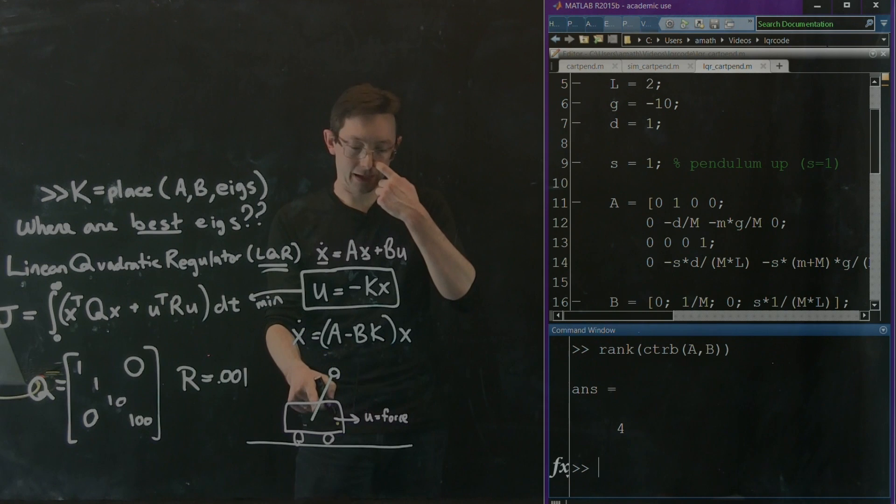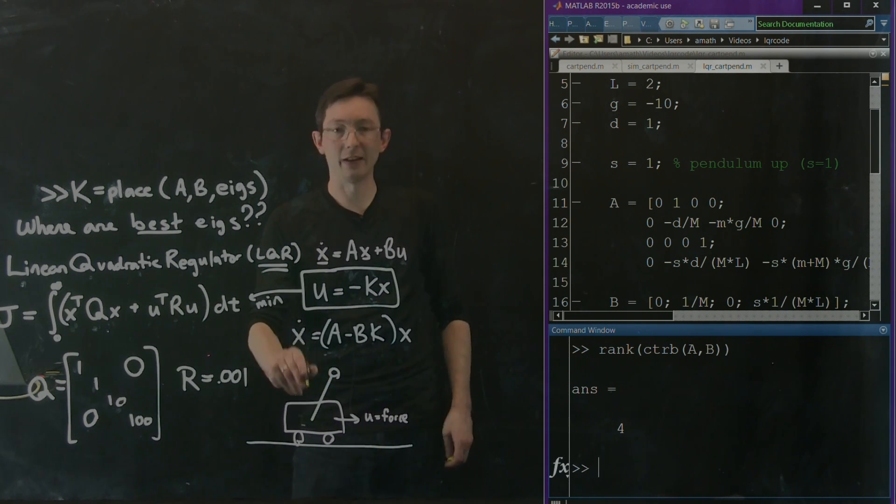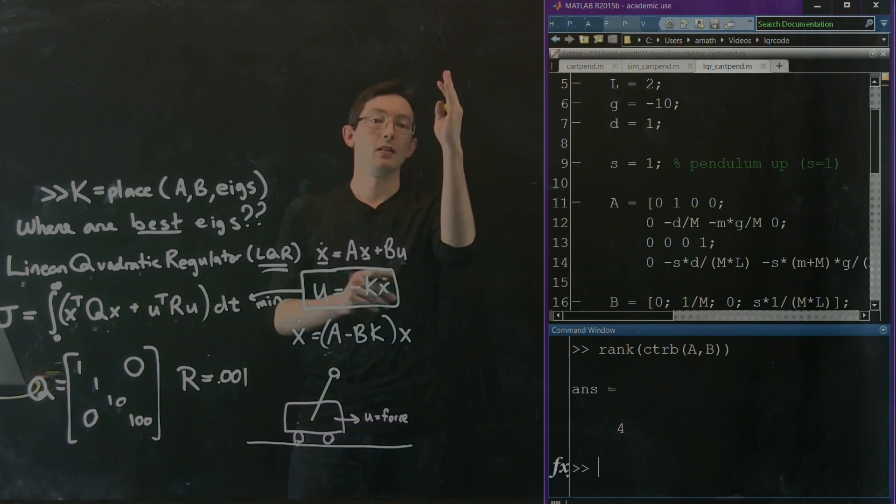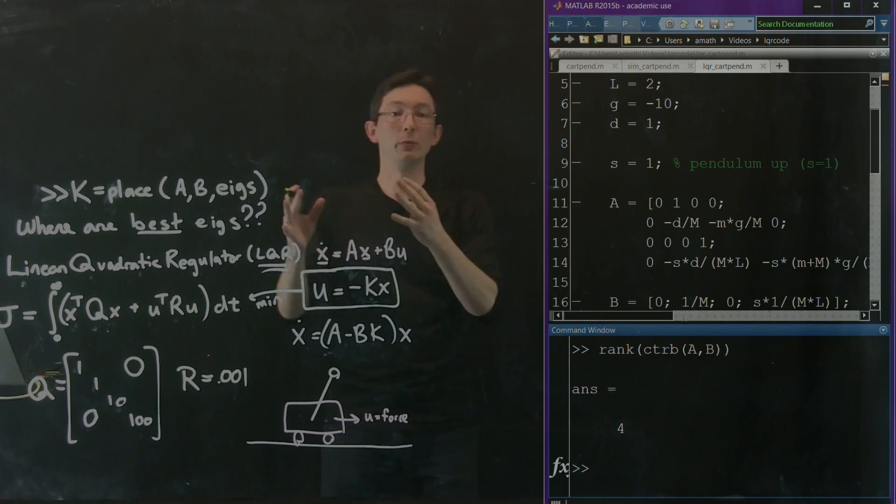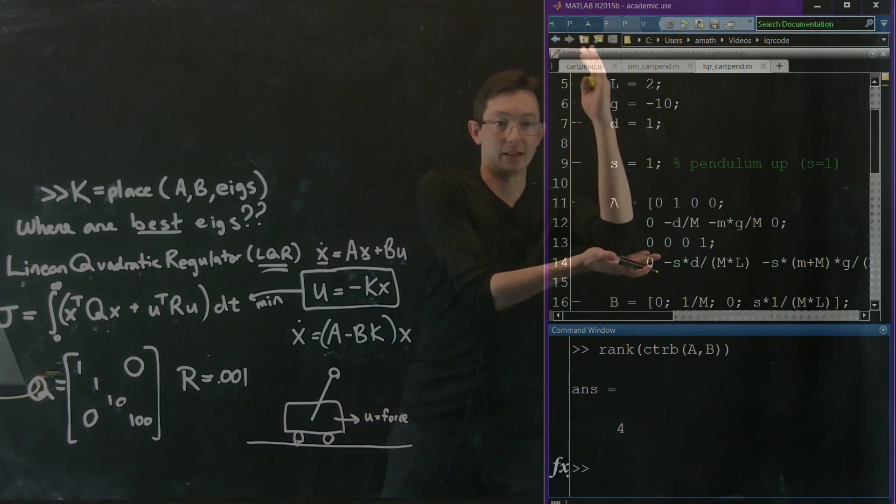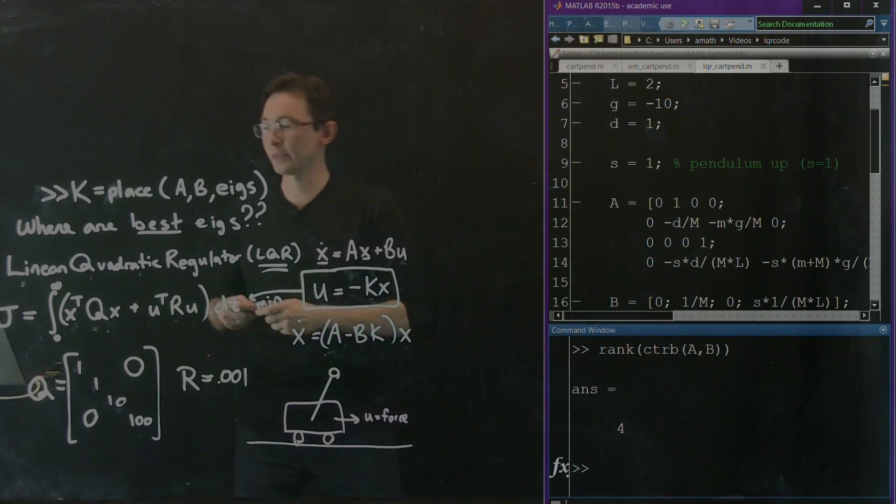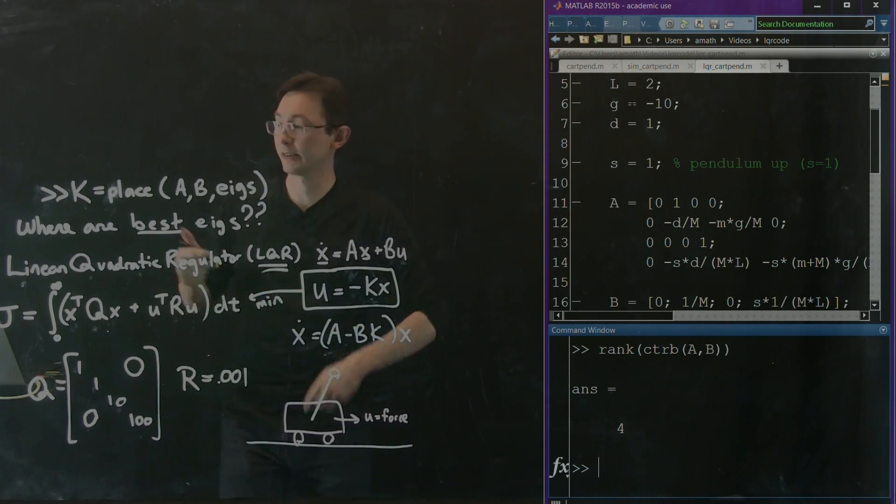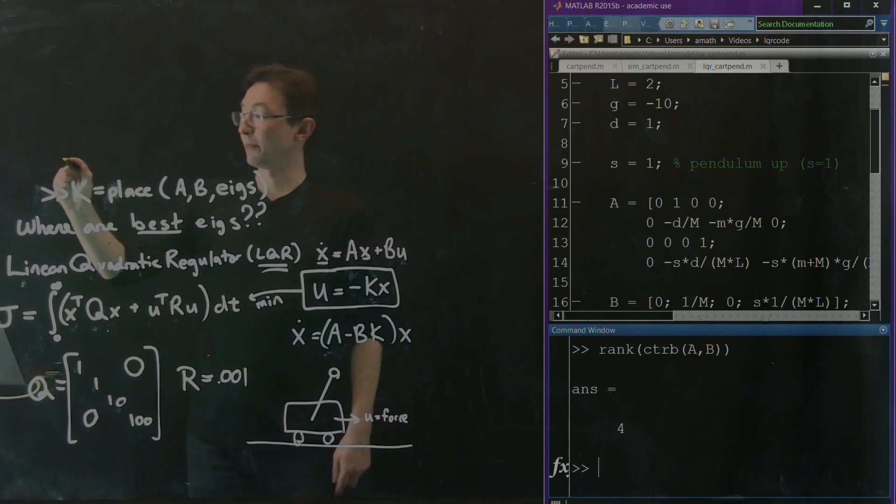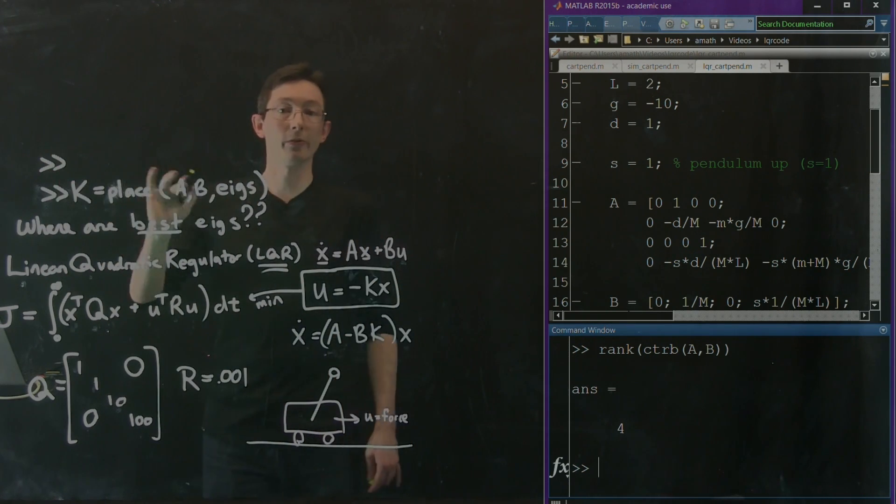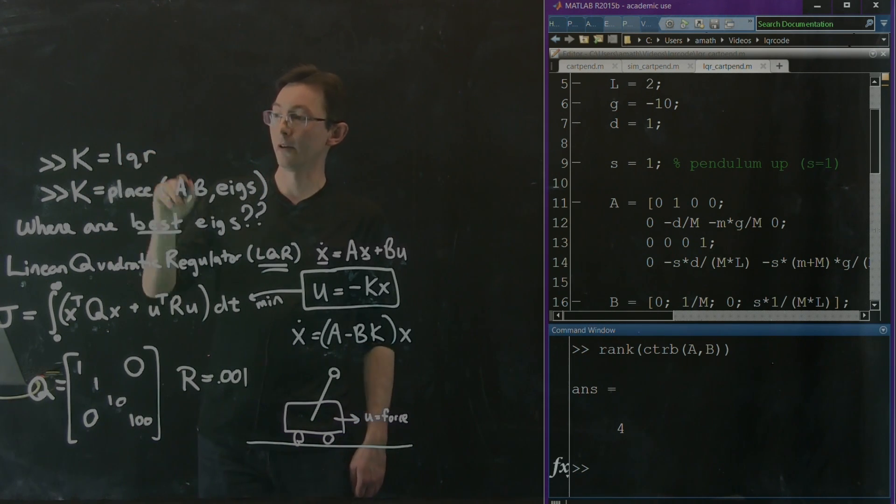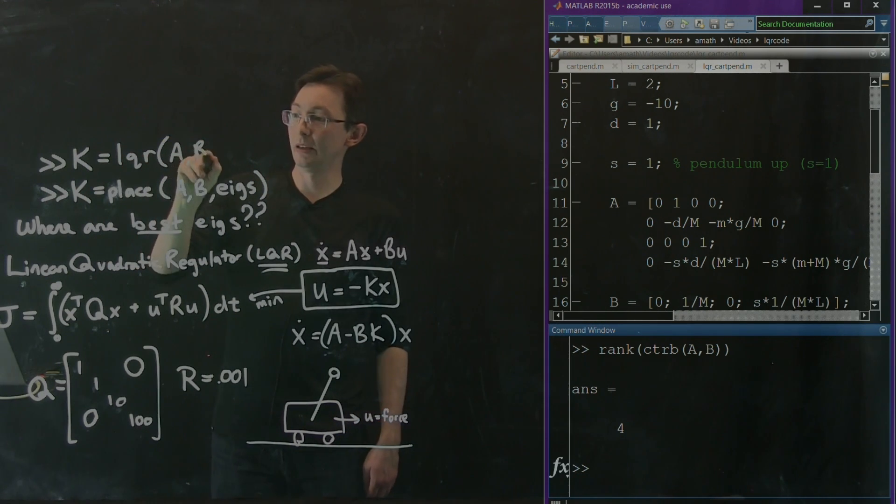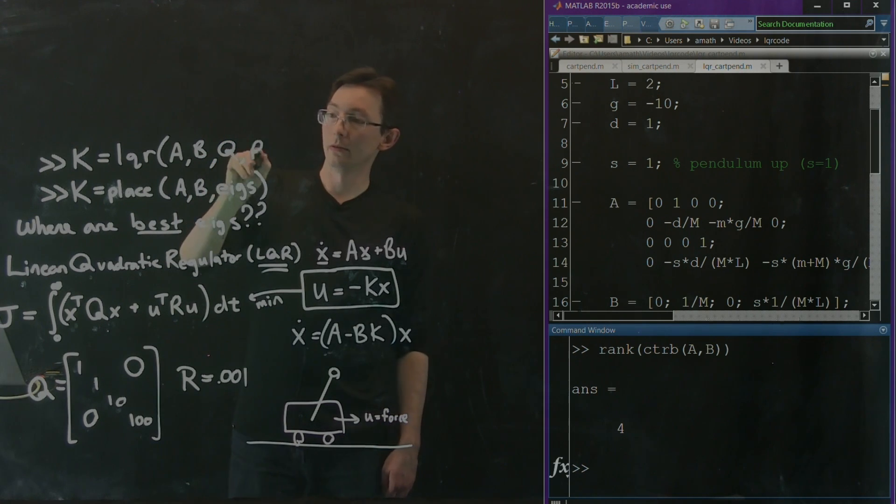And if I tell it a reference value of up and move over, 4 units, it will stabilize that system. So that's what a linear quadratic regulator is. And again, the great thing in MATLAB is that this is just incredibly easy. K equals LQR of A, B, Q, and R. It's that simple.